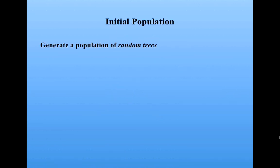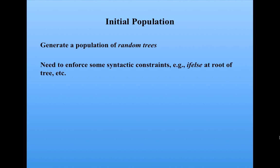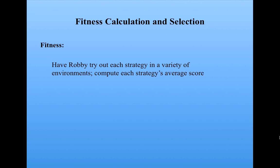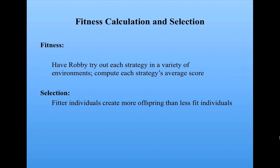Here's how that works. The initial population, instead of a set of random strings, is just a set of random trees, with some syntactic constraints — for example, we need an if-else at the root. To calculate fitness, it's the same procedure: we have Robby try out each strategy in a variety of environments, compute each strategy's average score, and then the fitter individuals get to create more offspring than the less fit individuals. That implements selection.